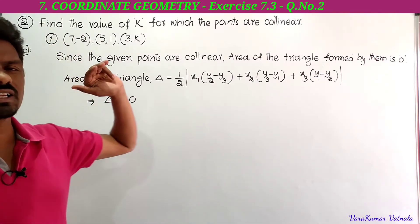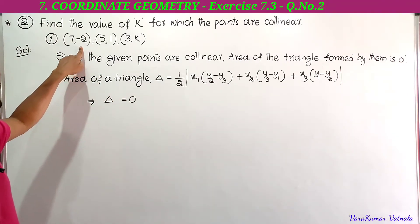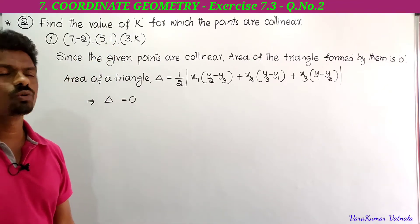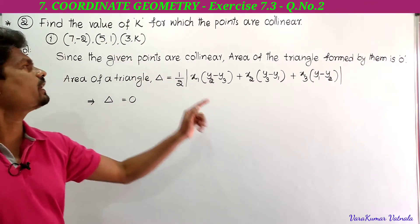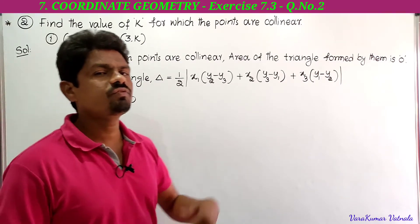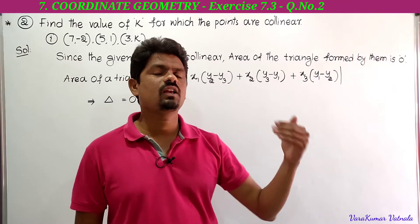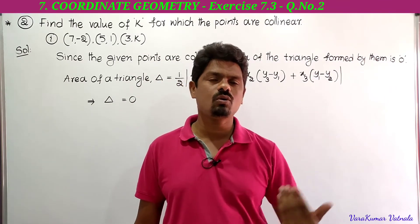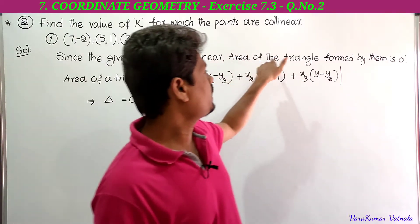This is the first bit. There are three bits in the second problem. The first bit gives three points: (7, -2), (5, 1), and (3, k). Since the given three points are collinear, he is asking us to find the value of k. If the given three points are collinear, then the area of the triangle formed by them is equal to 0.